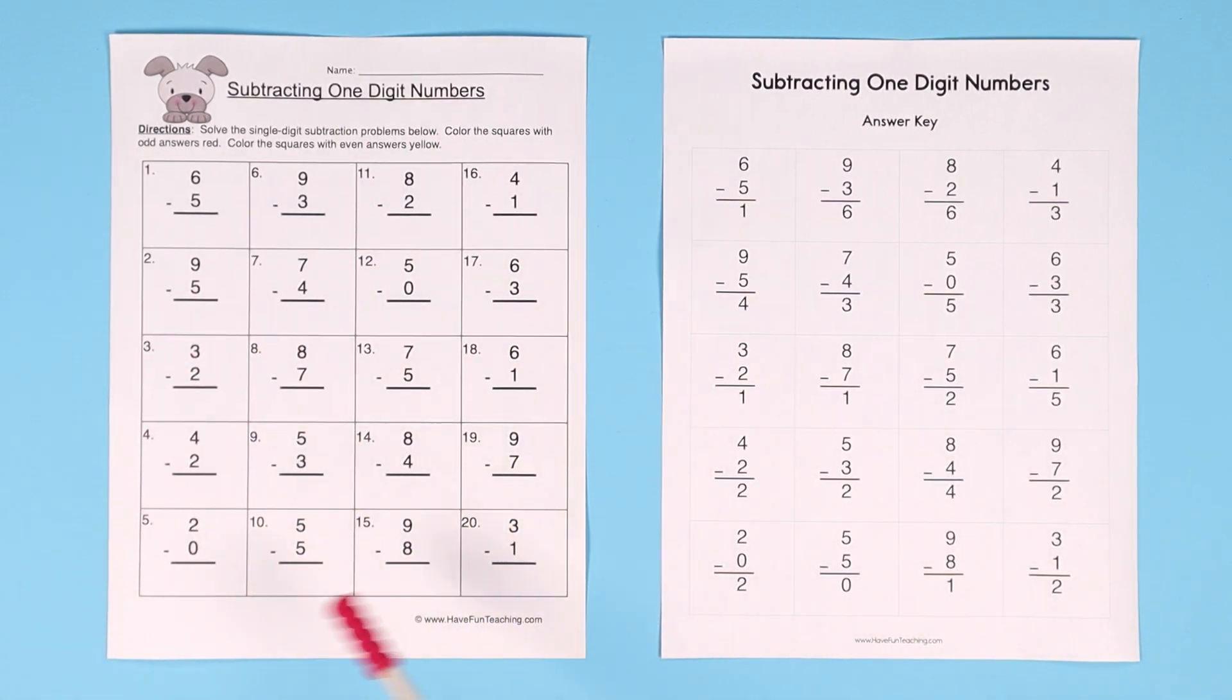That would be an extension activity you can do with your kids if this is really easy for them. That's good for differentiated instruction because if you have kids that are finishing early, really quick in your class, and they're just sitting there, go ahead and tell them what to do next. Say, hey, odd and even numbers, go ahead and color them.